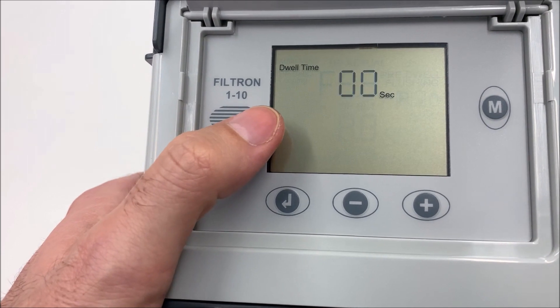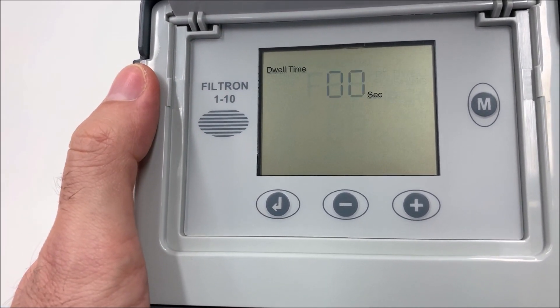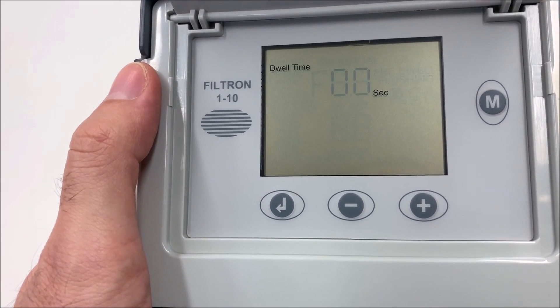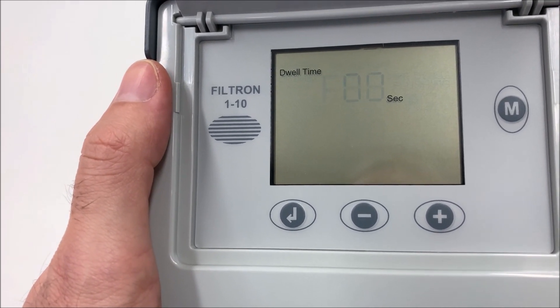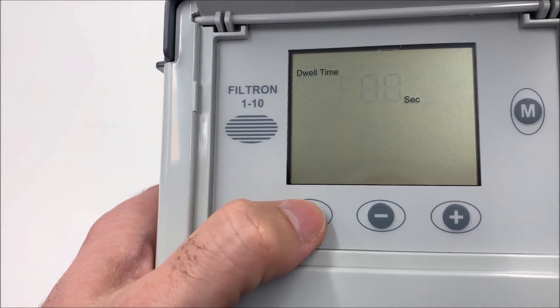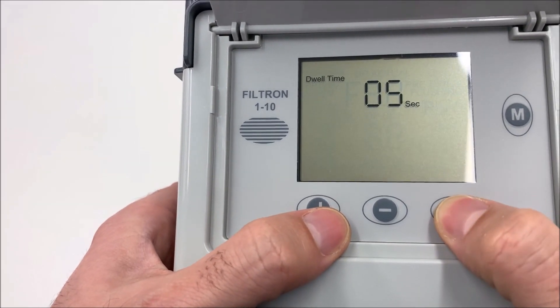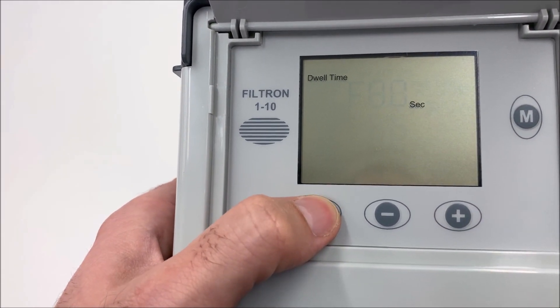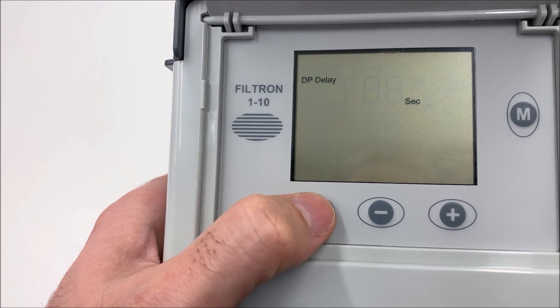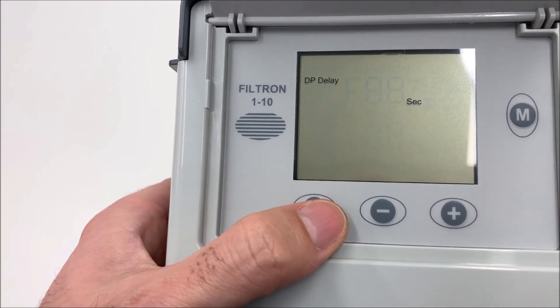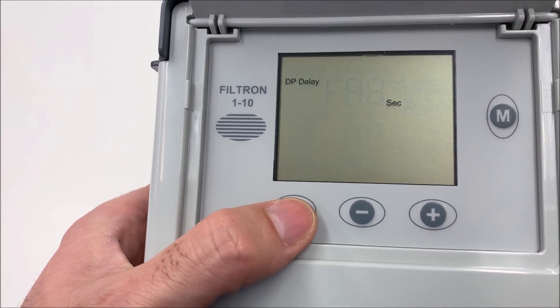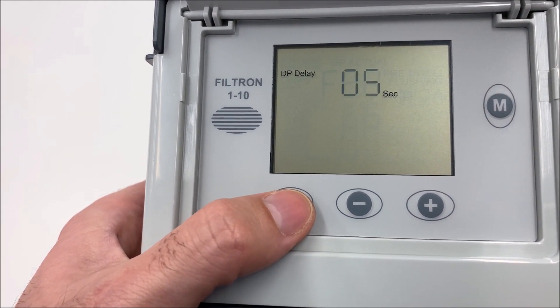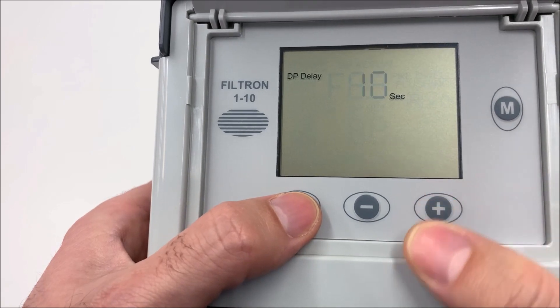Then we go for the dual time. Dual time is the time between filters in case it is a multiple filter bank. You can preset eventually 10 seconds. DP delay is the time that the differential pressure should be over the preset value before we start the backwash. We will put 10 seconds.